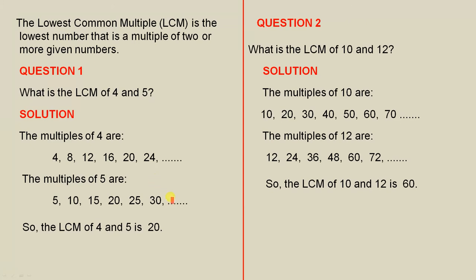These are some of the multiples of 5. If we notice here, the number 20 is the lowest number that occurs in each of those groups. So the LCM of 4 and 5 is 20.